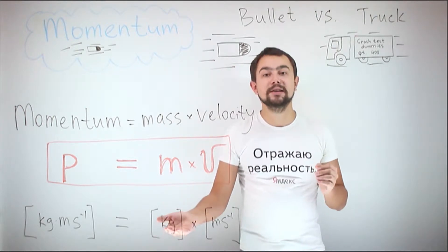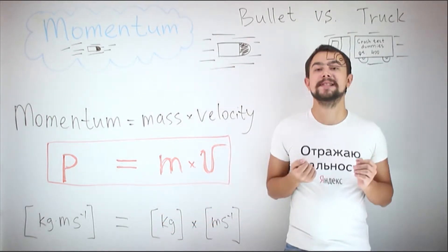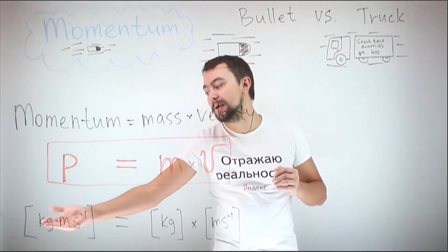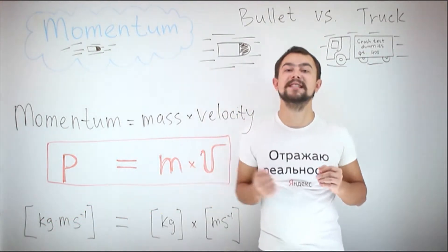Since mass is measured in kilograms and velocity in meters per second, it makes sense to assume that momentum is measured in kilograms meters per second.